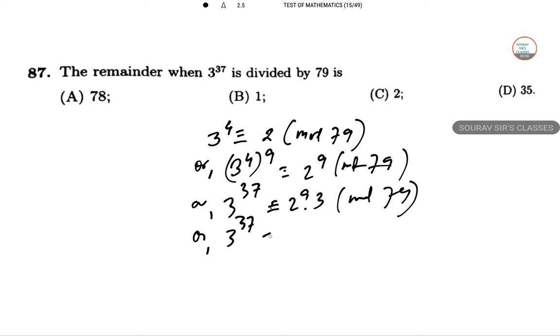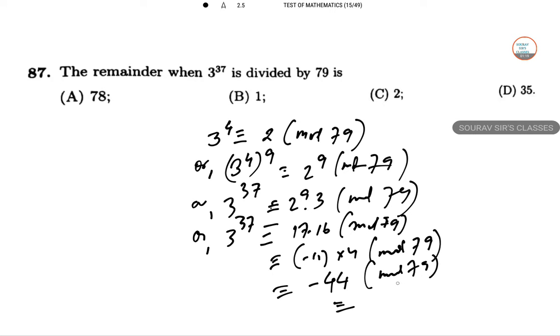3 to the power 37 equals 17, and 17 times 16 modulo 79 gives minus 11 times 4 modulo 79, which is minus 44 modulo 79. So 79 minus 44 equals 35 mod 79.